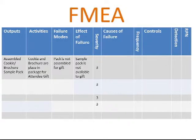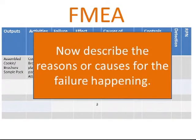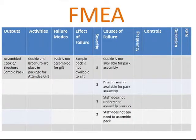At this point, you would take the severity table, and after reviewing the criteria, you would ask yourself, how severe or bad would it be for attendees or staff if this failure mode occurred? You're going to rate that on a scale of 1 to 10, and that number gets inputted into the severity column.